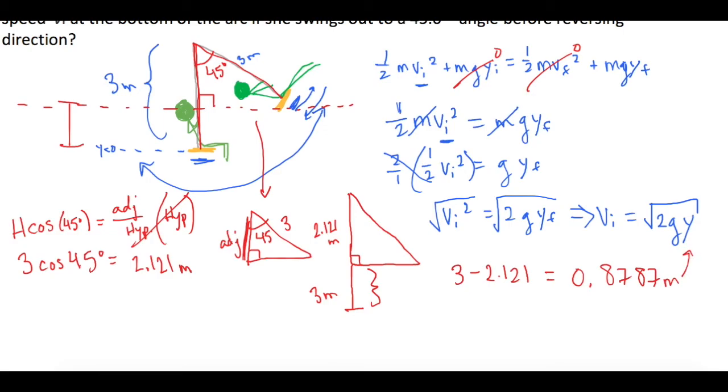So now we can plug that into our equation. v initial is equal to the square root of 2 times g times delta y, which we said is 0.8787.